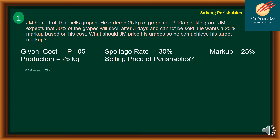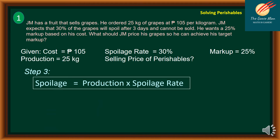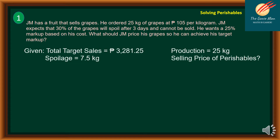Step 3: Find the spoilage. Spoilage equals production times the spoilage rate. Production is 25 kilograms and the spoilage rate is 30%, so spoilage equals 7.5 kilograms. This means out of 25 kilograms, you can no longer sell 7.5 kilograms.